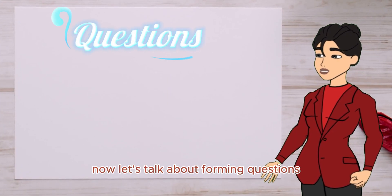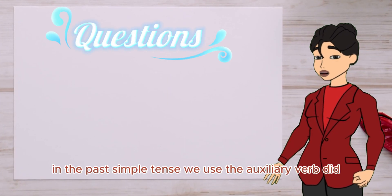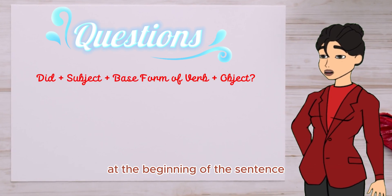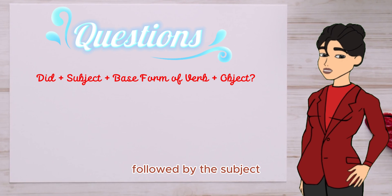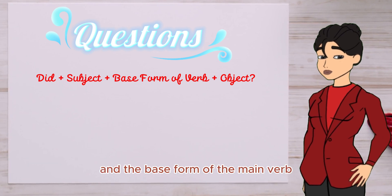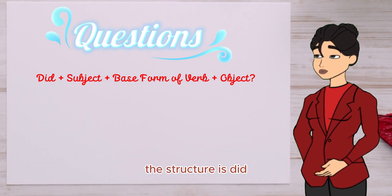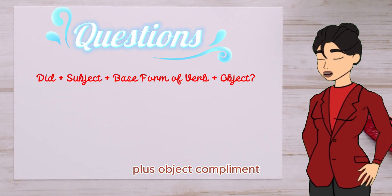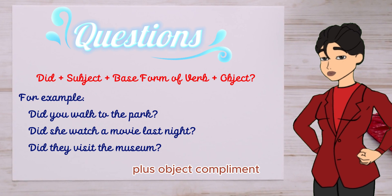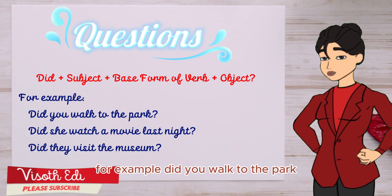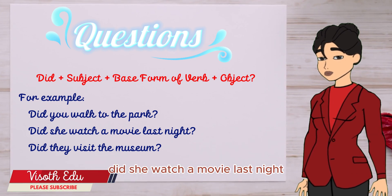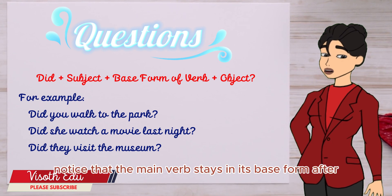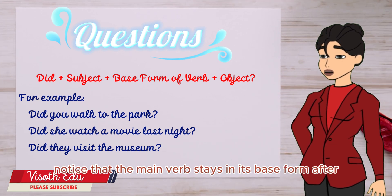Now, let's talk about forming questions in the past simple tense. We use the auxiliary verb "did" at the beginning of the sentence, followed by the subject and the base form of the main verb. The structure is: did + subject + base form of verb + object/complement. For example: "Did you walk to the park?" "Did she watch a movie last night?" "Did they visit the museum?" Notice that the main verb stays in its base form after "did".